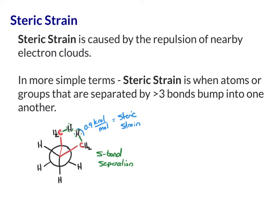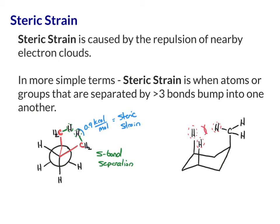Another place where we see steric strain is in the 1,3-diaxial interactions in chair cyclohexane. Having a large group like a methyl group in the axial position is destabilizing because of the 1,3-diaxial interactions with neighboring hydrogens. If you draw out the hydrogens on the relevant carbons, this axial hydrogen bumps into the other axial hydrogens, creating strain. The separation between those is one, two, three, four, five bonds — a five-bond separation — so this is steric strain.